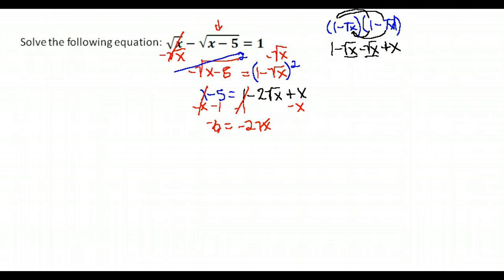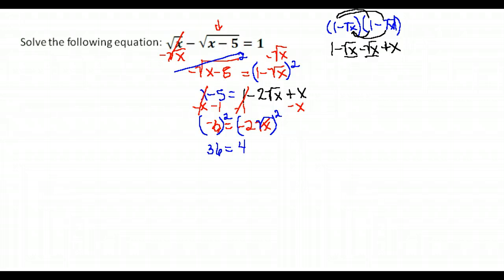At this point, you could either divide both sides by negative 2, or you can go ahead and square both sides. Again, we want to remove that radical. If we square both sides, do not forget to square the 2. So on the left, negative 6 squared gives me 36. And on the right, negative 2 squared is 4, and the square root of x squared is just x. Let's go ahead and solve that. Divide both sides by 4, and I get that x is equal to 9.